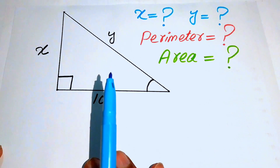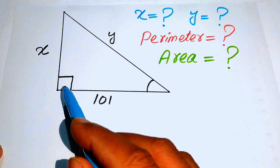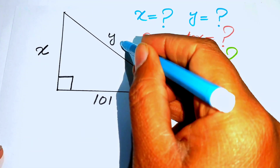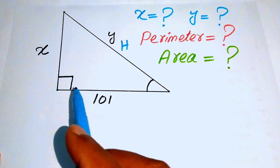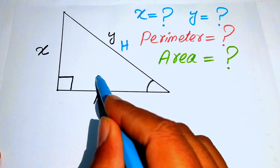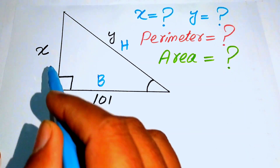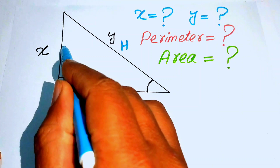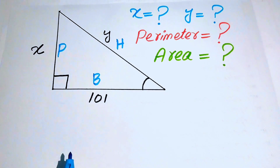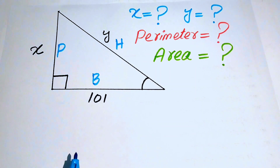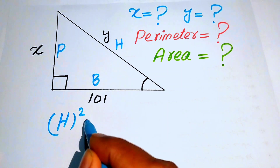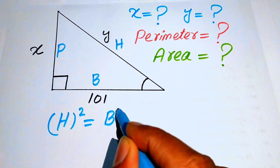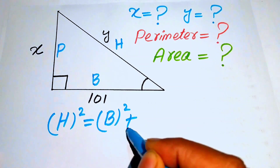The side opposite to the right angle is known as the hypotenuse, so that is our hypotenuse. The side joining these two angles is called the base, and the remaining side is called the perpendicular. Now we use the Pythagorean theorem.